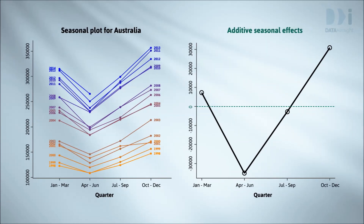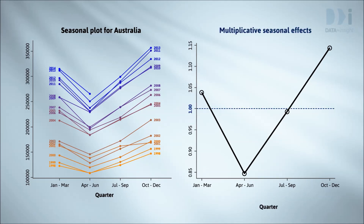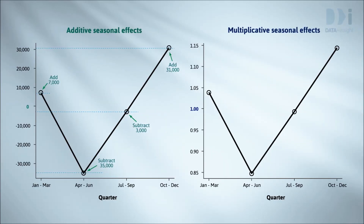This is the additive seasonal plot for the Australian series — what we're used to looking at. And this is the multiplicative seasonal plot. Placing them side by side: the additive model tells us what we should add on, while the multiplicative model tells us what we should multiply by.